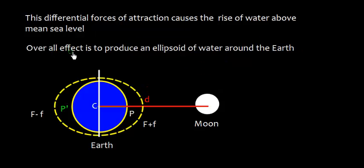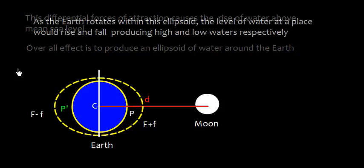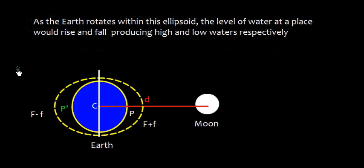So the overall effect is to produce an ellipsoid of water around the earth like this. And as the earth rotates within this ellipsoid, the level of water at a place would rise and fall, which will produce high and low waters respectively. This is called lunar tide.